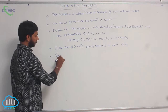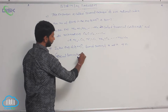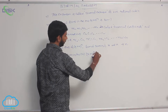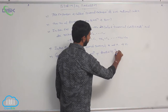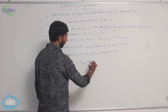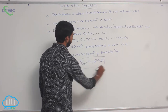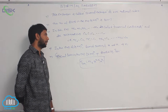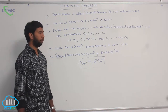The general term in the expansion of (x + a)^n is denoted by T(r+1). Therefore, T(r+1) = nCr · x^(n-r) · a^r.